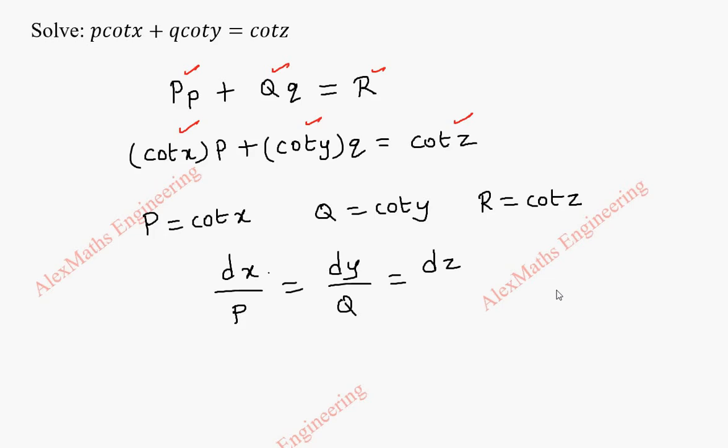That is dx by P equal to dy by Q equal to dz by R. By substituting we get dx by cot x, dy by cot y,